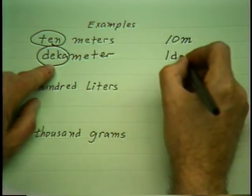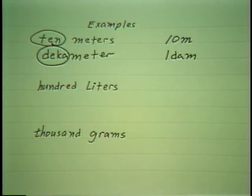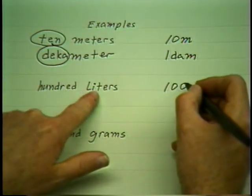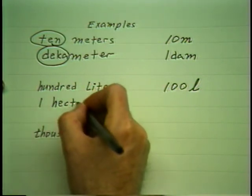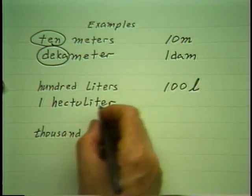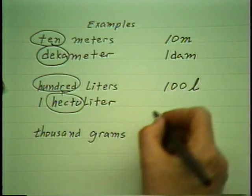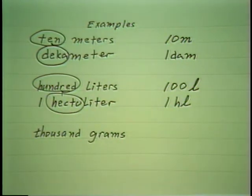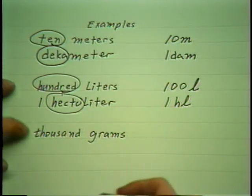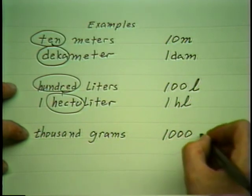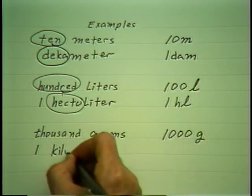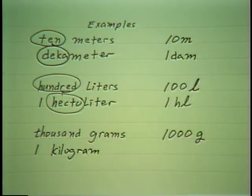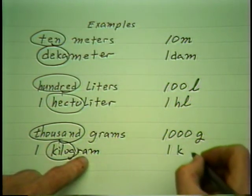1 decameter is abbreviated DA-M. Now if I want to say 100 liters — the abbreviation for liter is simply L — instead of saying 100 liters, I could say 1 hectoliter. Hecto means 100; the abbreviation is H-L. And 1,000 grams — which is a little bit more than 2 pounds — would be abbreviated G; instead of saying 1,000 grams, I could say 1 kilogram. Kilo is metric for 1,000, abbreviated K-G.